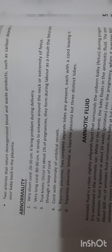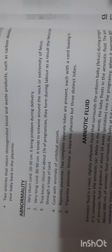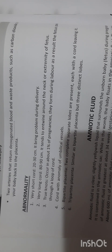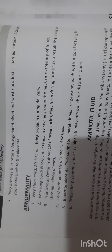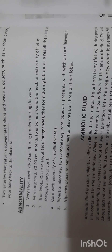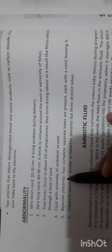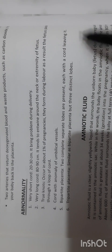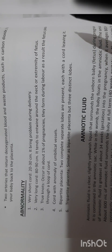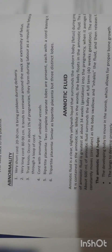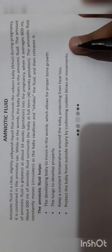Umbilical cord abnormalities: a very short cord of 20 to 30 centimeters brings problems during delivery. A very long cord of 80 to 90 centimeters tends to entwine around the neck of the fetus, and the long cord can form a true knot during pregnancy, causing respiratory distress. Bipartite placenta has two separate lobes each with a cord. Tripartite placenta, similar to bipartite, has three distinct lobes — twins and triplets have higher chances.